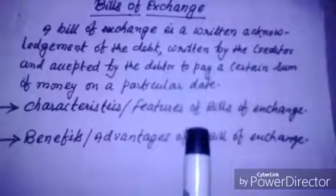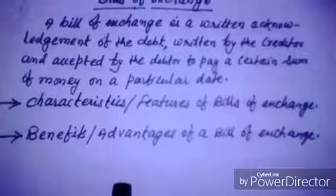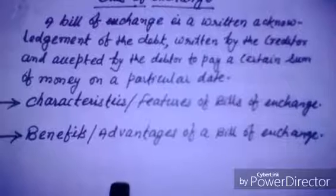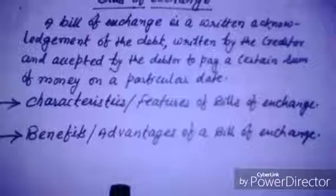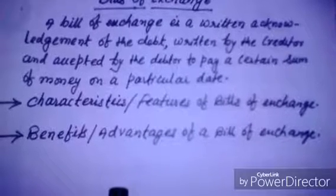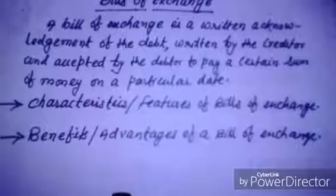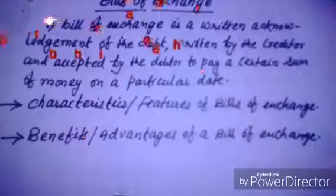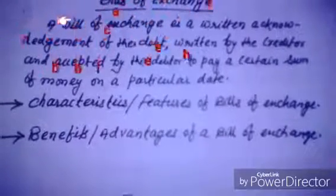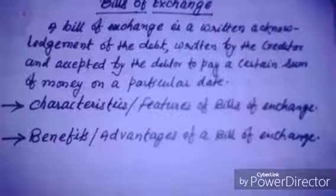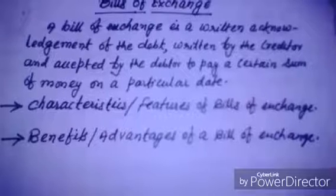The features of a bill of exchange are: first, it must be in writing; second, it must contain an order to pay; third, the order to pay must be unconditional; fourth, it must be signed by the drawer; fifth, the drawer, drawee, and payee must be certain; sixth, the sum payable must be certain; seventh, the bill must contain an order to pay money only; eighth, the date of payment must be certain; and ninth, the amount is payable either to the bearer of the bill or to a specified person.